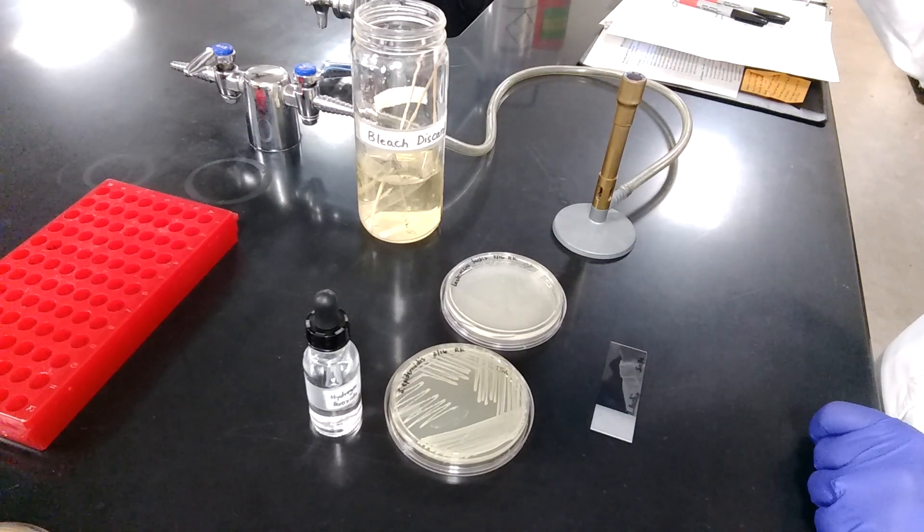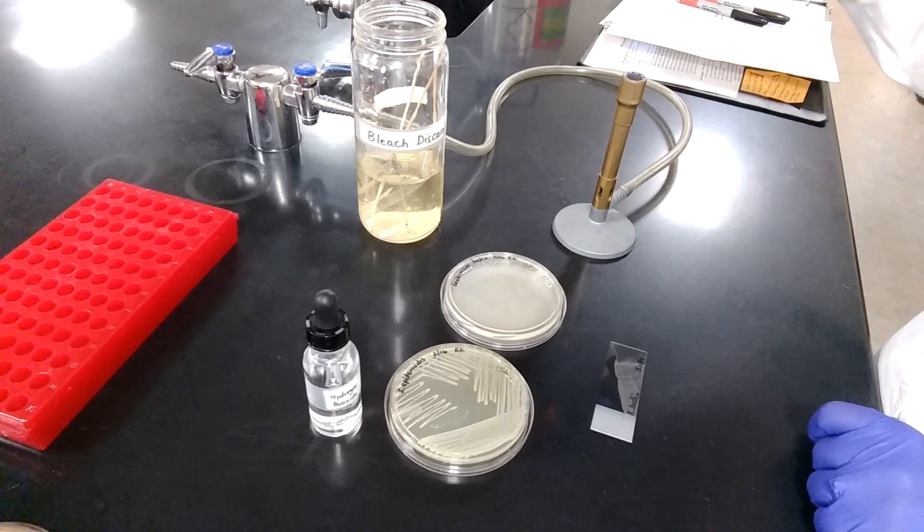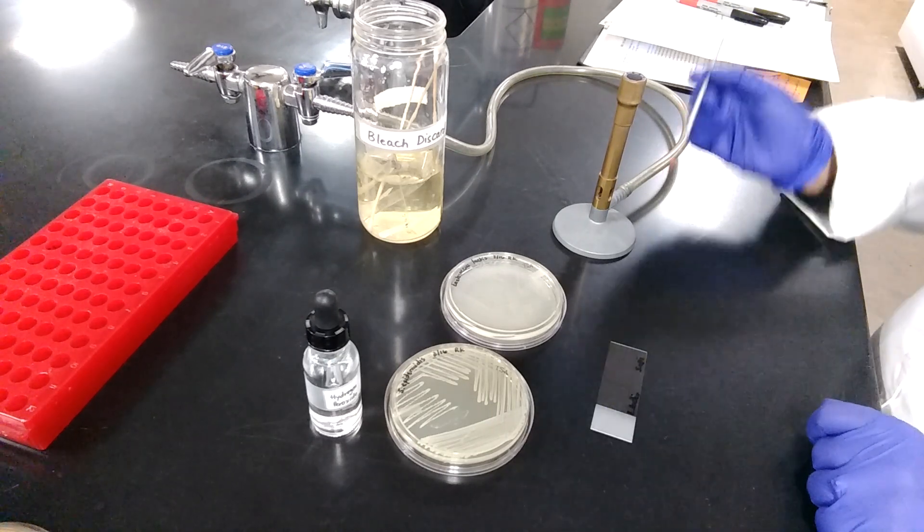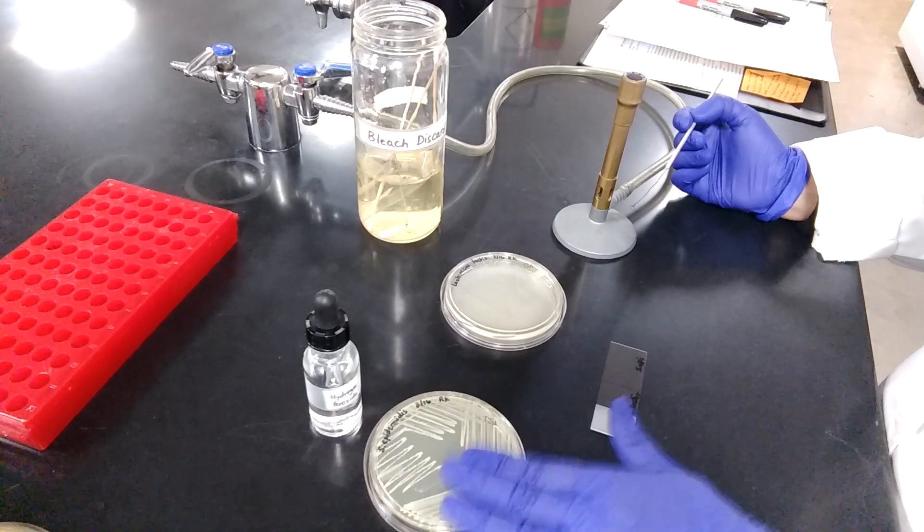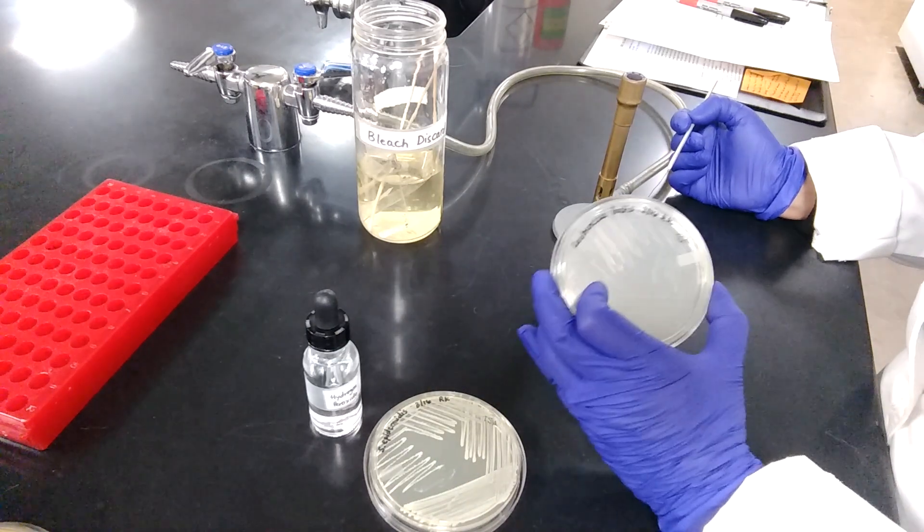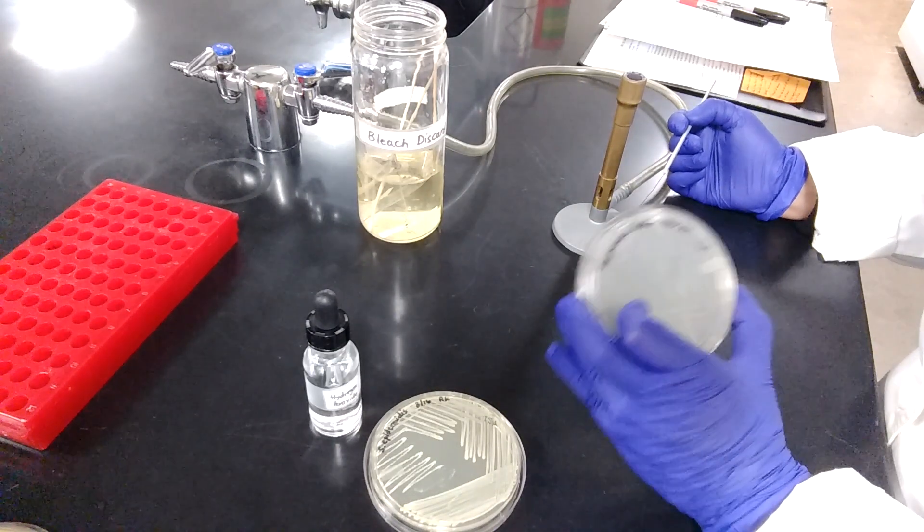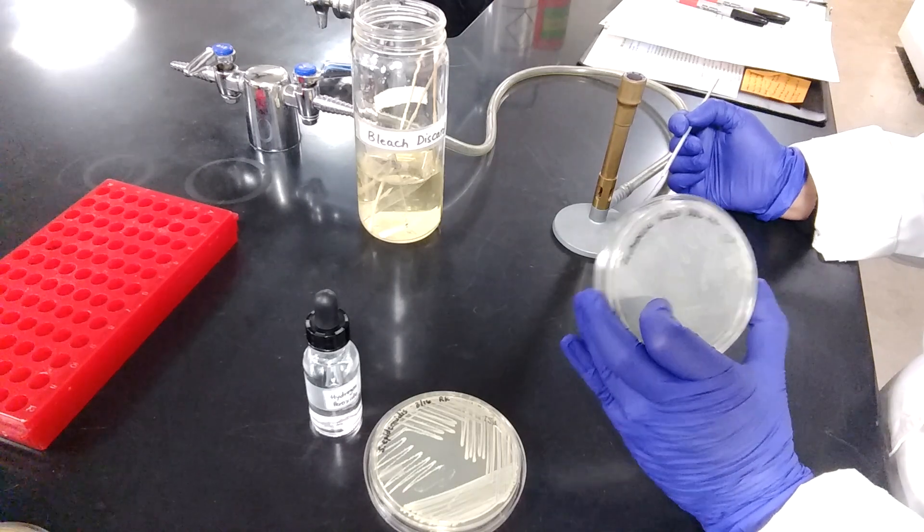First, sterilize your inoculating loop. Let it cool down. Then, aseptically, transfer the bacterial culture onto the clean glass slide. Here, I'm starting with Lactococcus lactis.